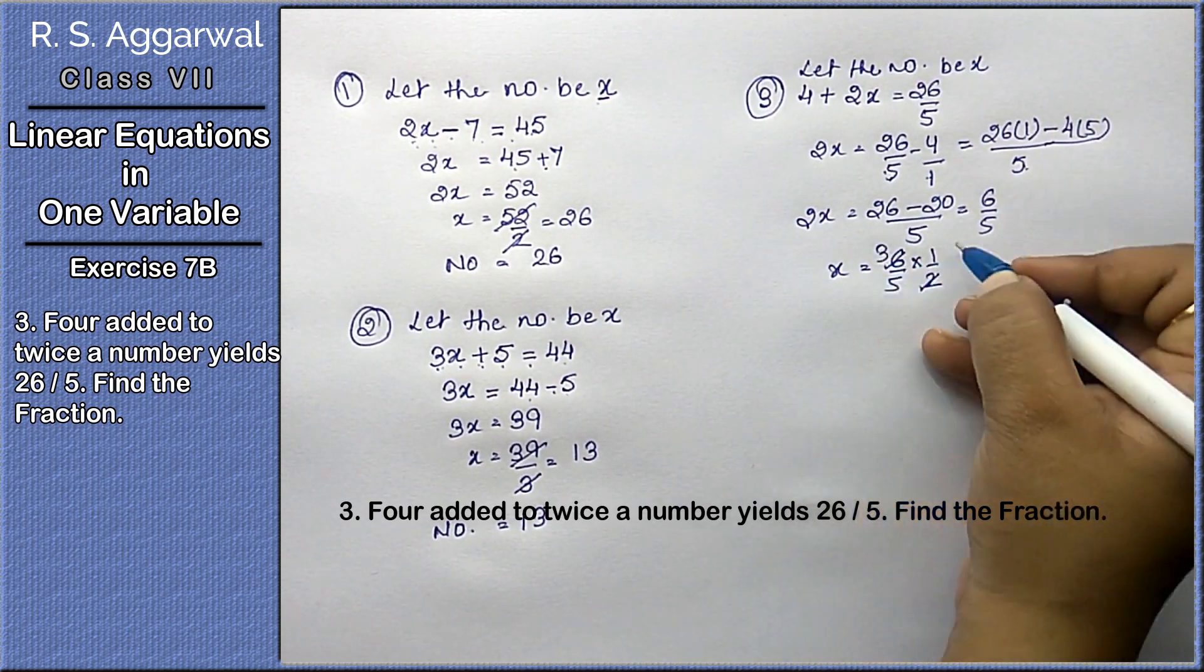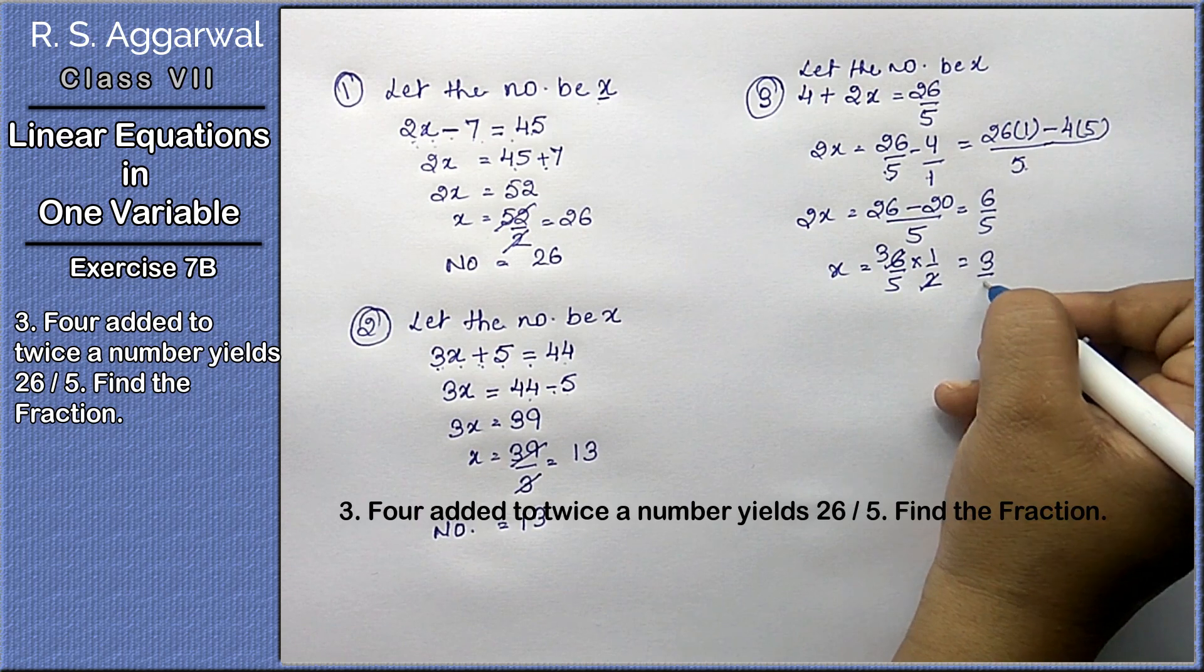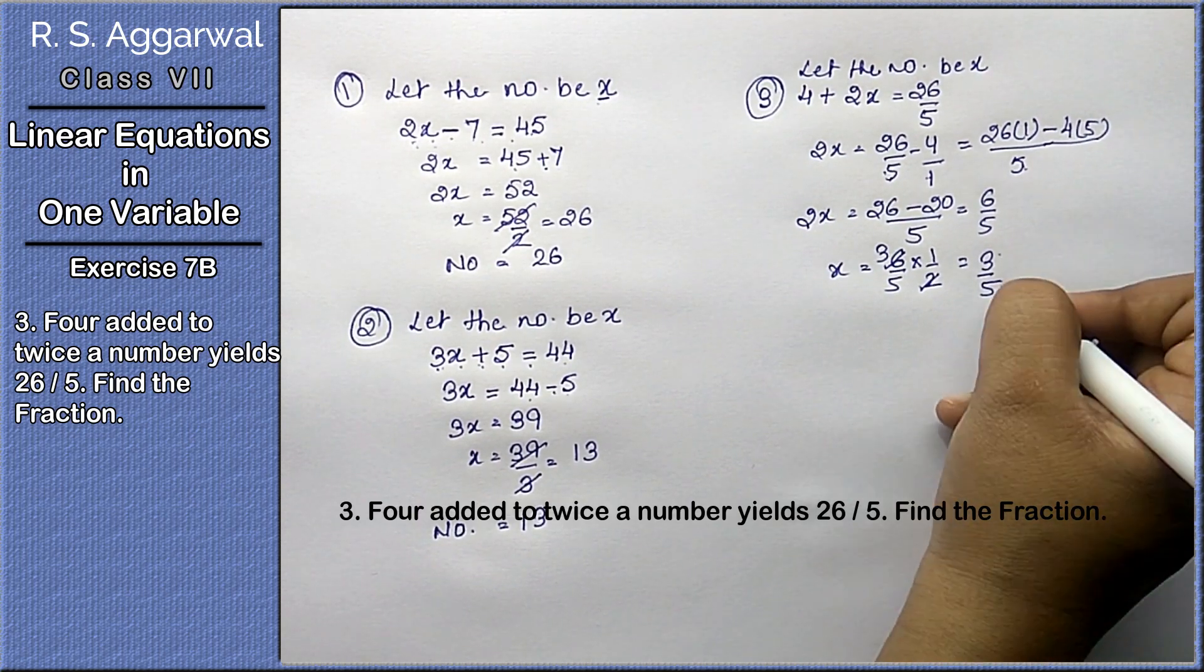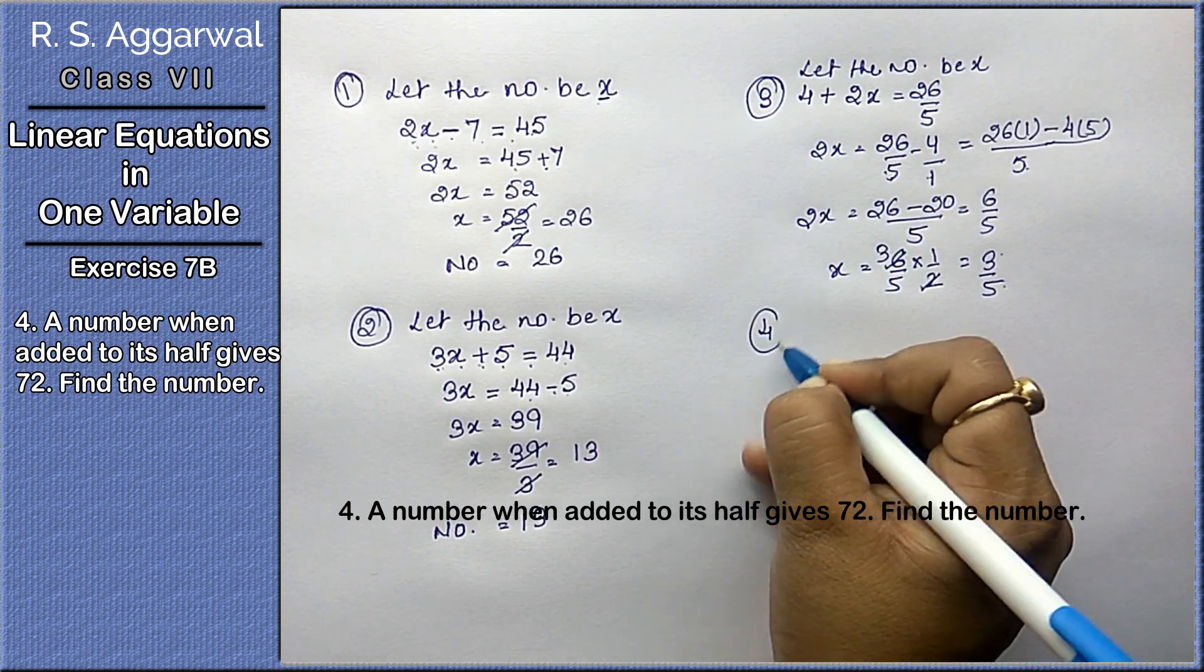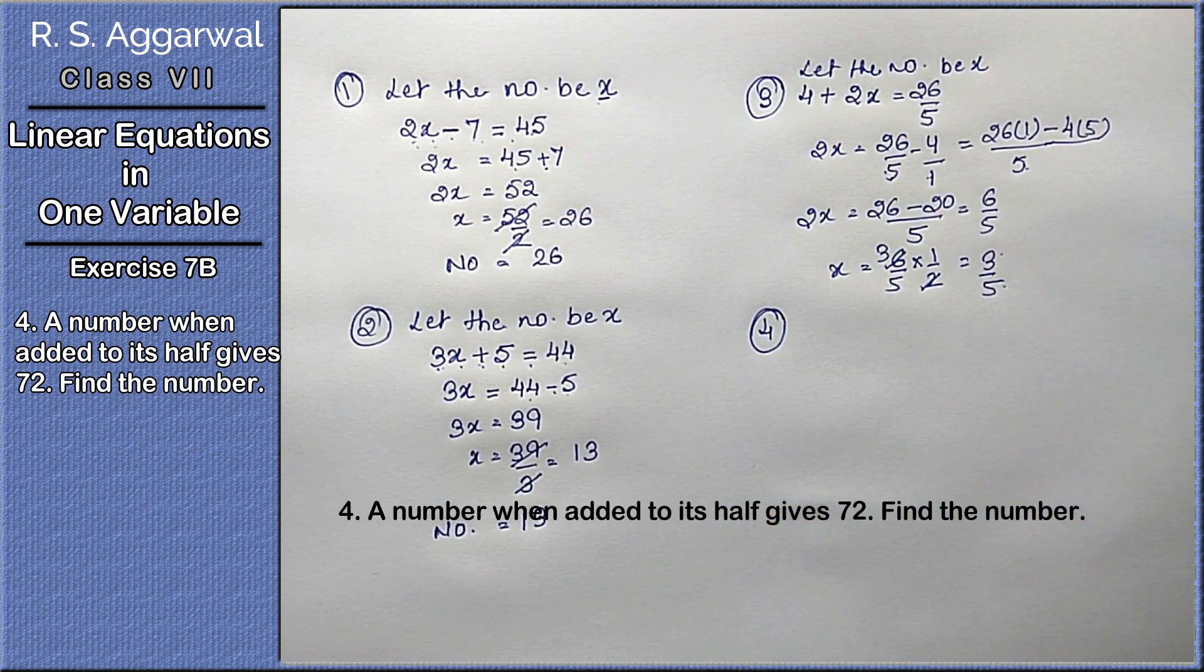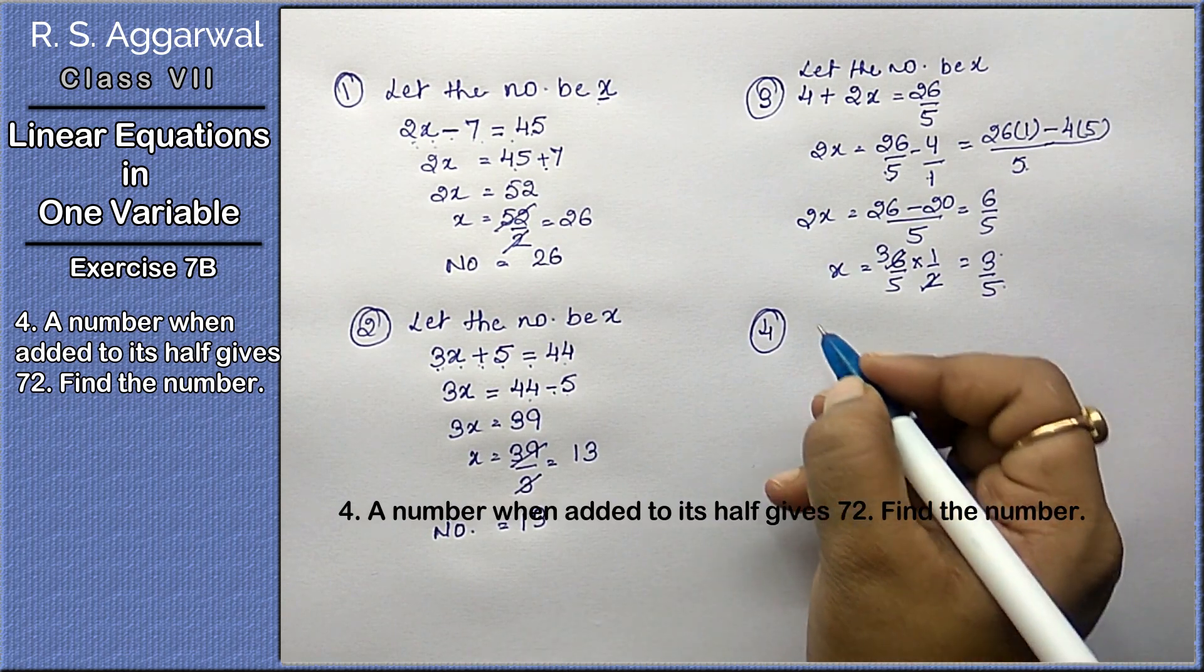2 ones are 2, 3 sixes are 6, so 3 upon 5 is the answer. It is in fraction in the form of A upon B. Now let's do the 4th part. A number when added to its half gives 72, find the number.